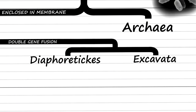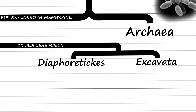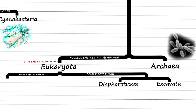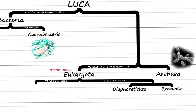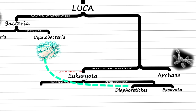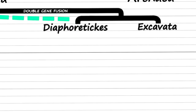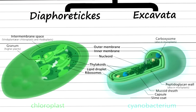It is thought that around the time that Excavata split from the Diaphoretics, the cyanobacteria were absorbed, like mitochondria had been earlier. These cyanobacteria may have evolved or differentiated into the specialized organelles that we see in plant cells today, such as chloroplasts.